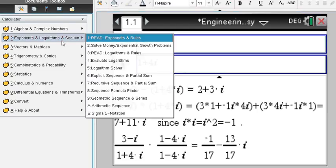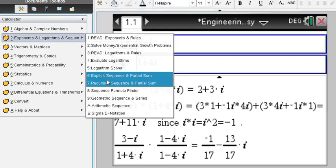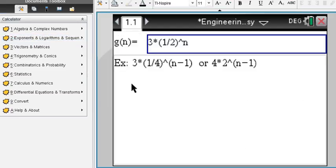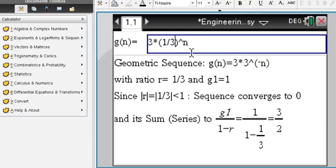And exponents, logarithms, geometric sequences and series. Enter the geometric sequence formula right here. Then it shows you that the common ratio is 1/3 and the first term is 1. Since the common ratio absolute value is less than 1, the sequence converges to 0 and the sum, which is a series, converges to 3/2 using this handy formula g1 over 1 minus r.